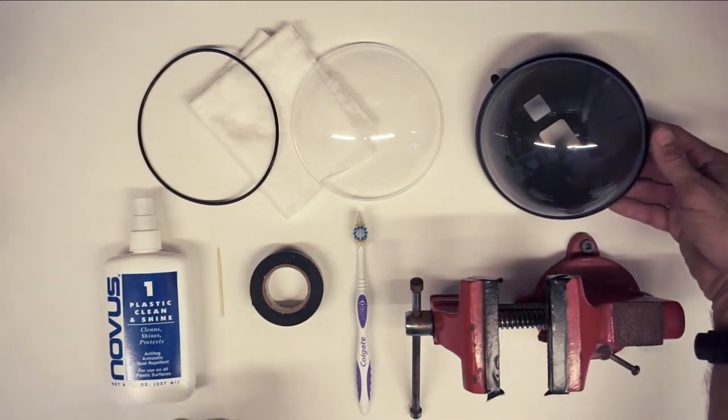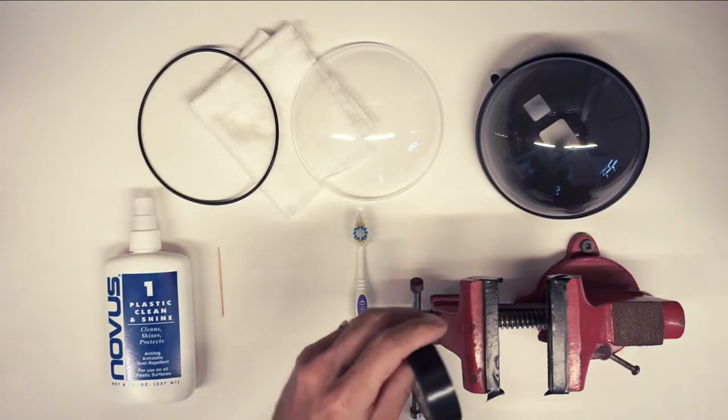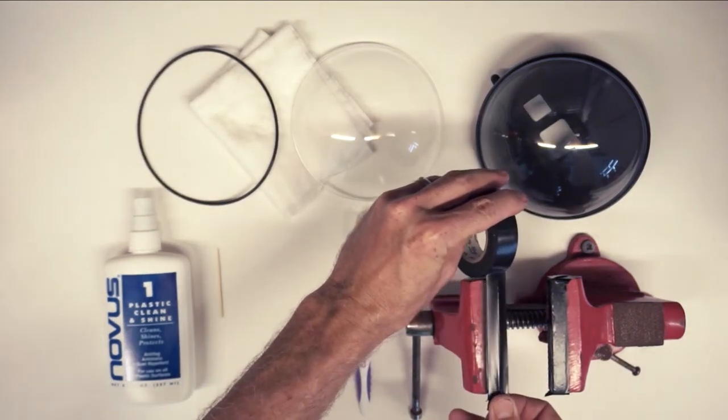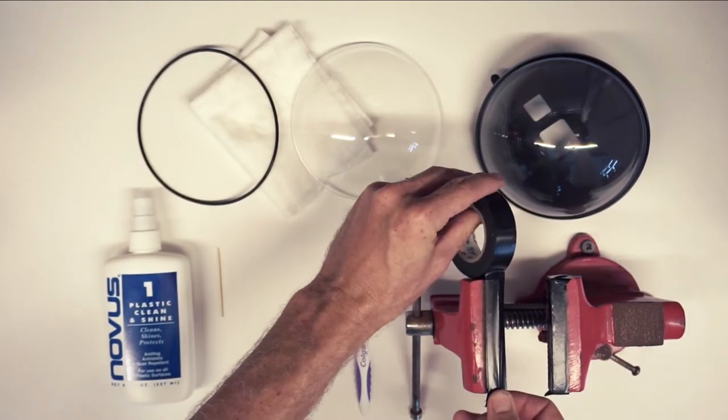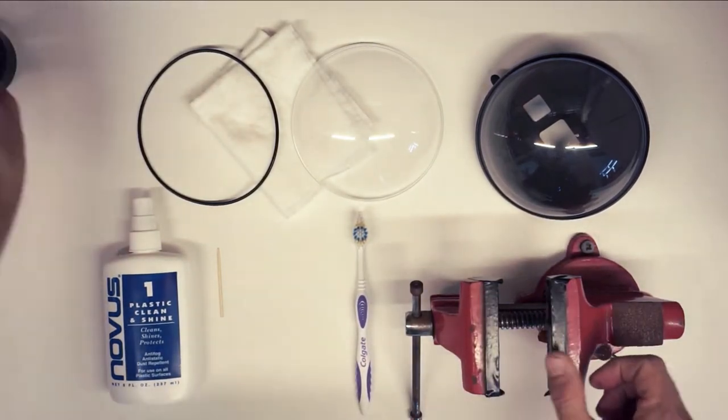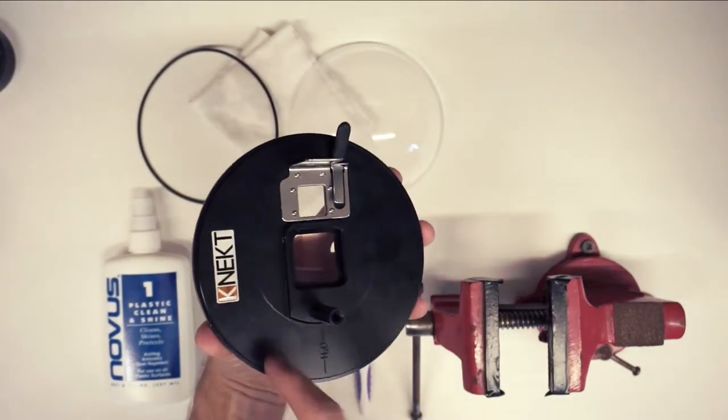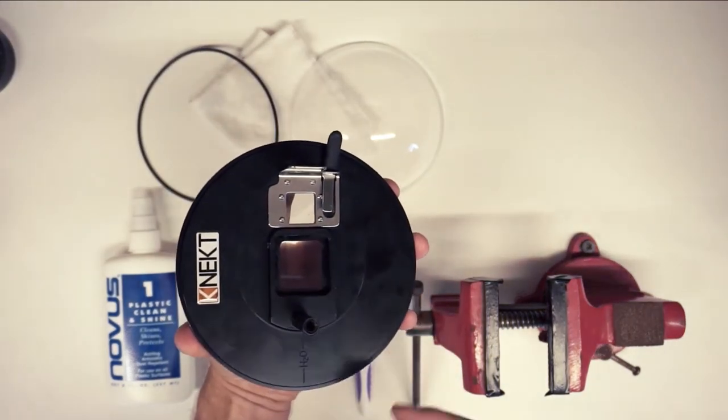So the first thing you're going to do is take some of the electrical tape and line the edge of the table vise. I've already done so, as you can see, it's protected here. And the reason we do that is to protect the edge of the backing plate so that it doesn't get damaged.